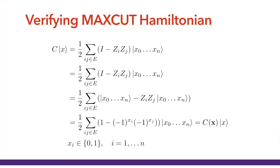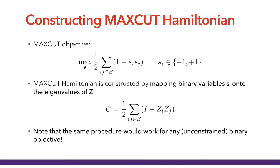What we want to show is that the action of C on |x⟩ equals C(x)|x⟩. C applied to |x⟩ equals one-half sum over edges of (identity minus Z_i Z_j) applied to |x⟩. Identity does nothing, so we get |x⟩ minus Z_i Z_j |x⟩. And Z_i Z_j |x⟩ adds a factor of (−1)^{x_i}(−1)^{x_j}. This is exactly the value of our objective function on binary string x. This concludes the demonstration that the Hamiltonian — one-half sum over edges of (I − Z_i Z_j) — faithfully represents our objective.